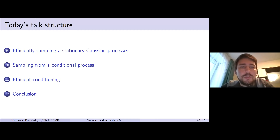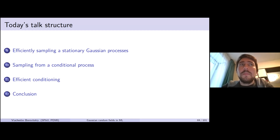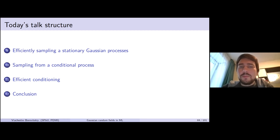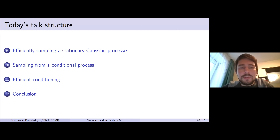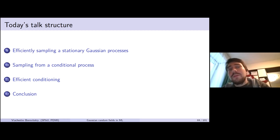First in this lecture I will talk about efficiently sampling a stationary Gaussian process — a special kind of Gaussian process that is a very popular choice for priors or unconditional processes in machine learning. Then I will talk about sampling from a conditional Gaussian process for which the corresponding unconditional process is stationary. Finally, I will talk about efficiently conditioning Gaussian processes, after which there will be a conclusion to this whole course.